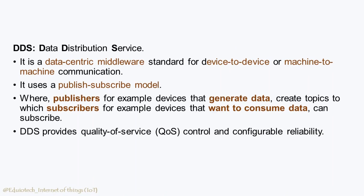DDS — Data Distribution Service — is a data-centric middleware standard for device-to-device or machine-to-machine communication. It uses a publish-subscribe model where publishers, such as devices that generate data, create topics to which subscribers, such as devices that want to consume data, can subscribe. DDS provides quality of service control and configurable reliability.